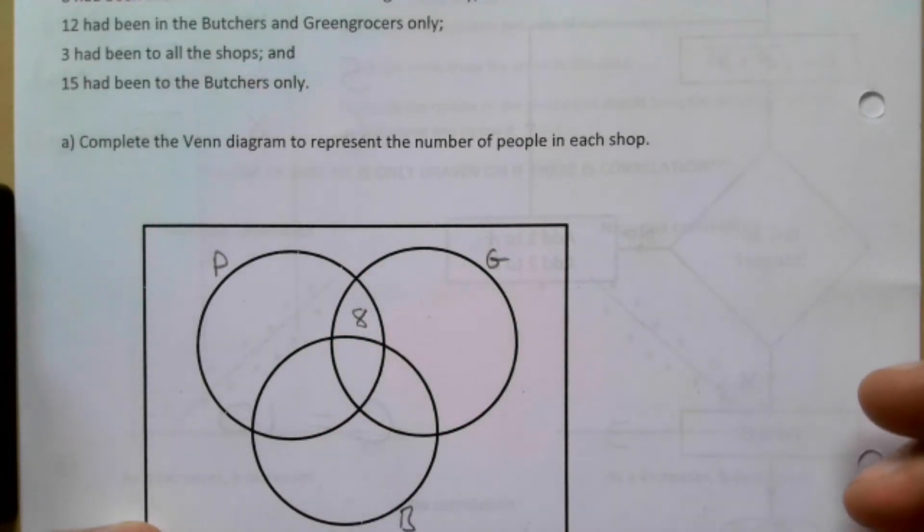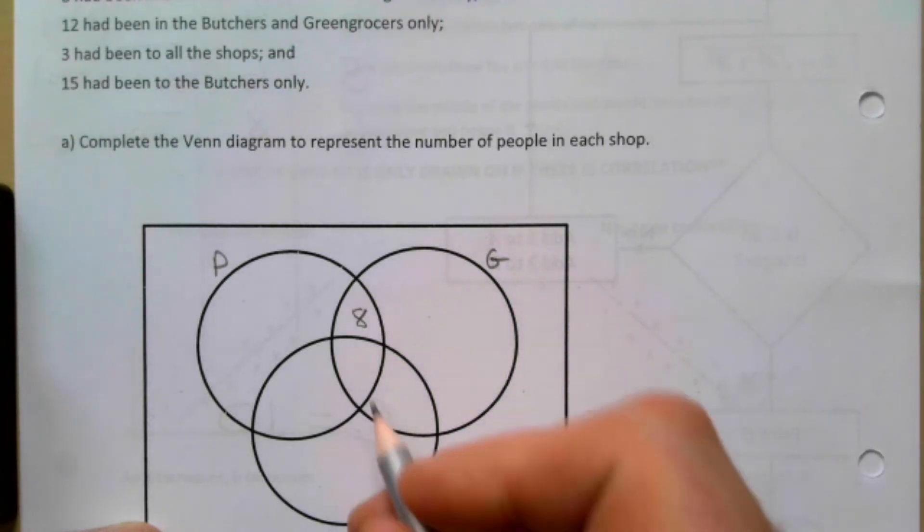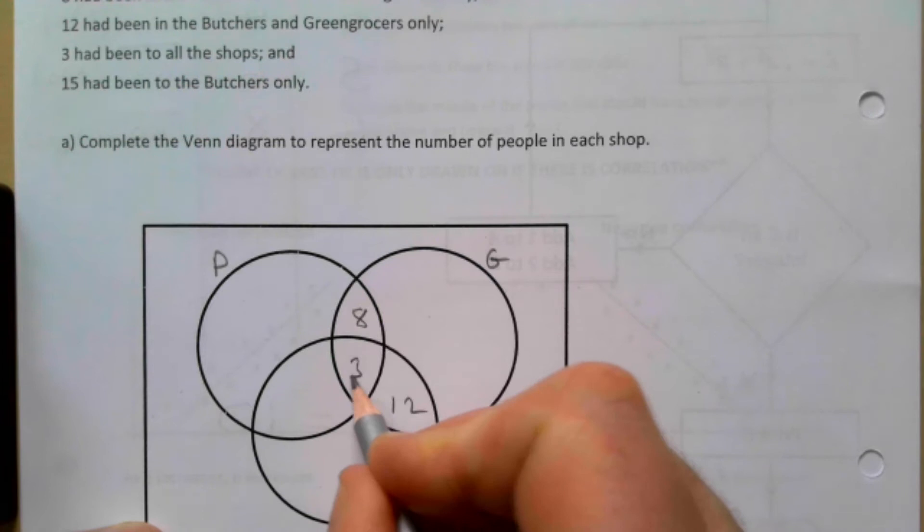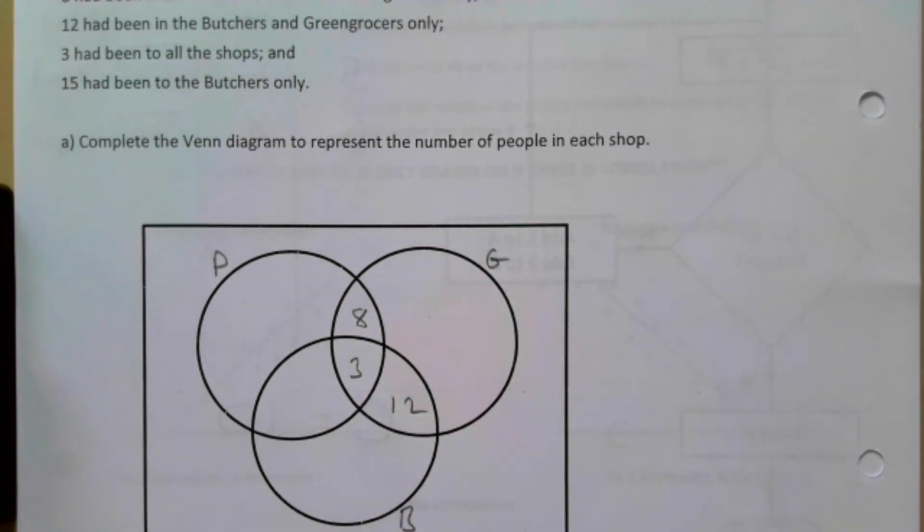12 had been in the Butchers and Greengrocers only, so that 12 is going to be there. 3 had been to all the shops and 15 had been to the Butchers only.